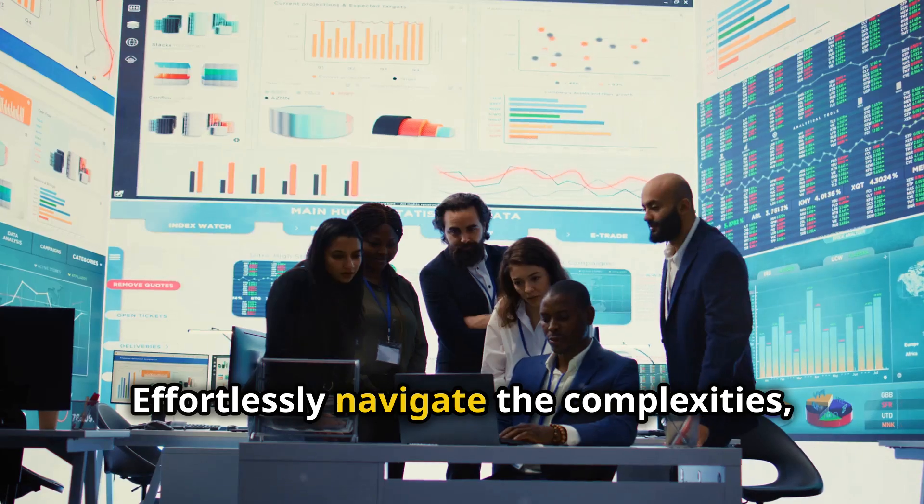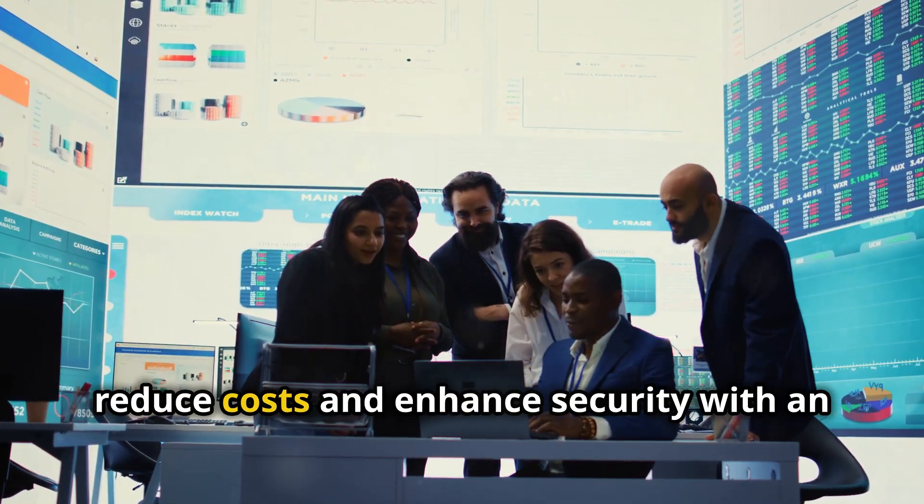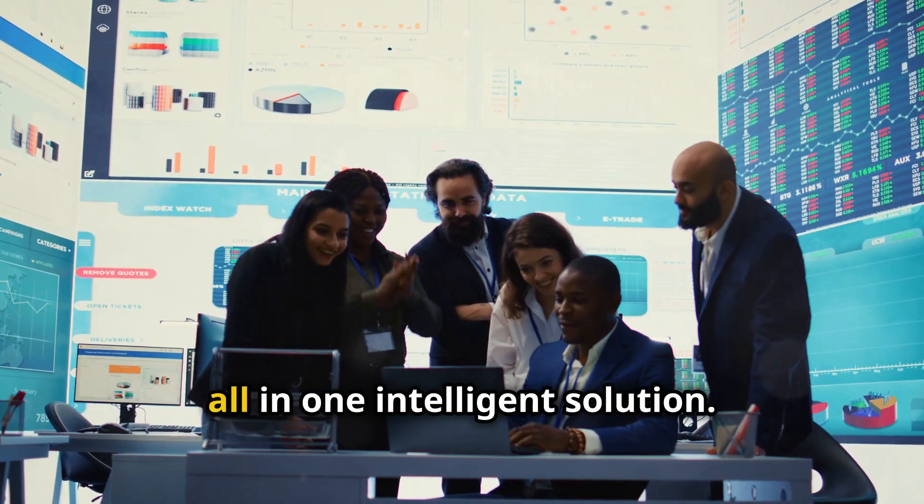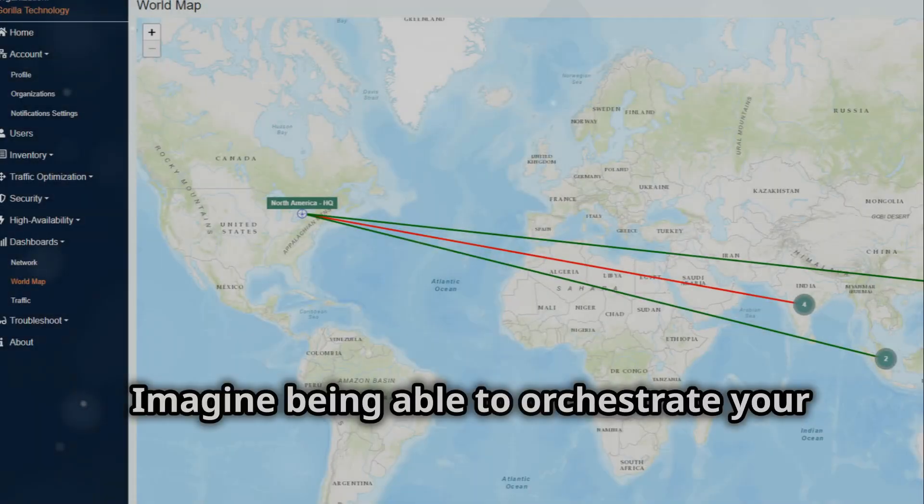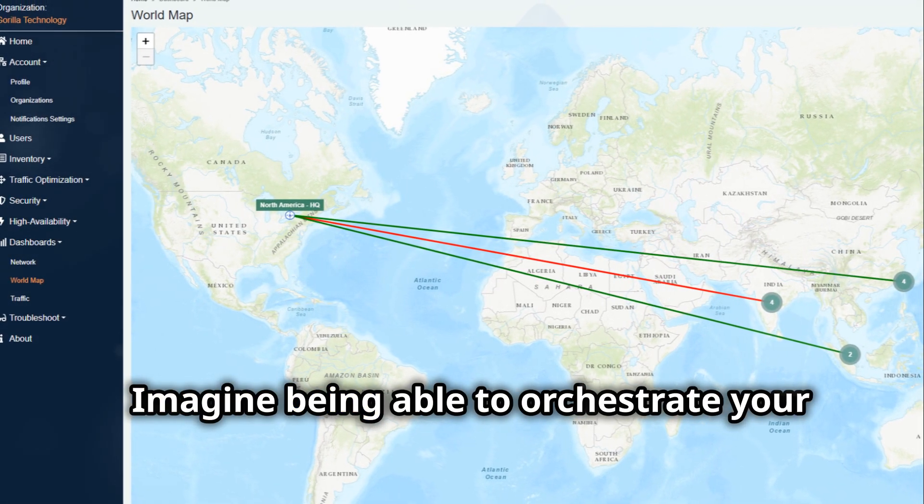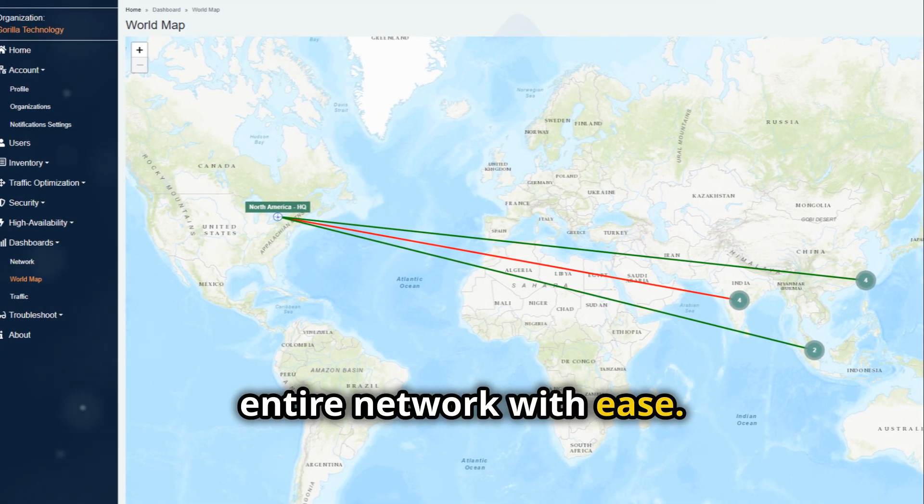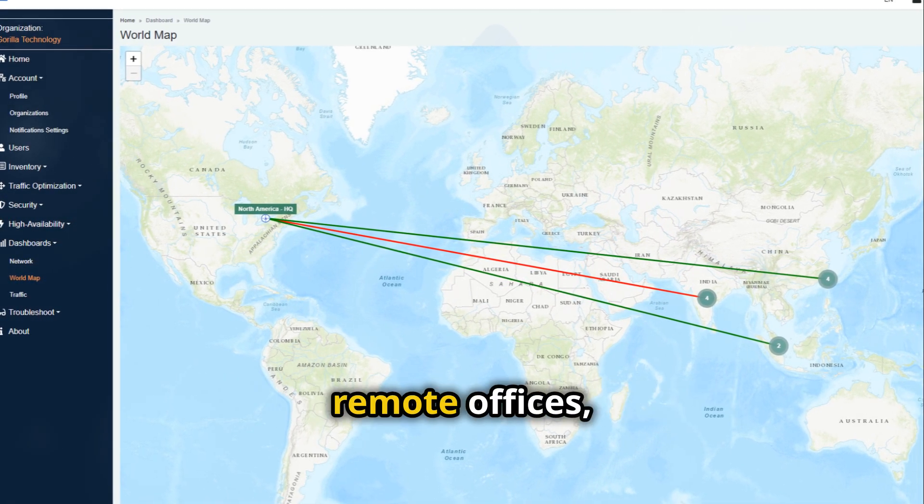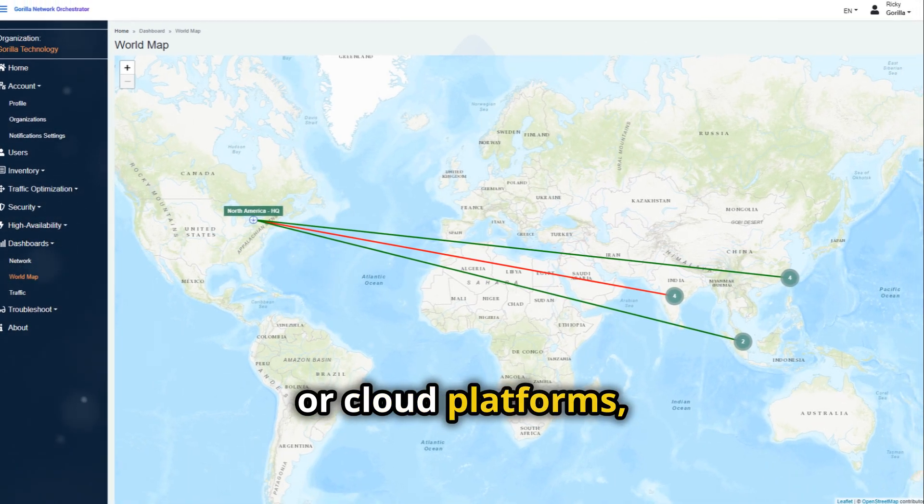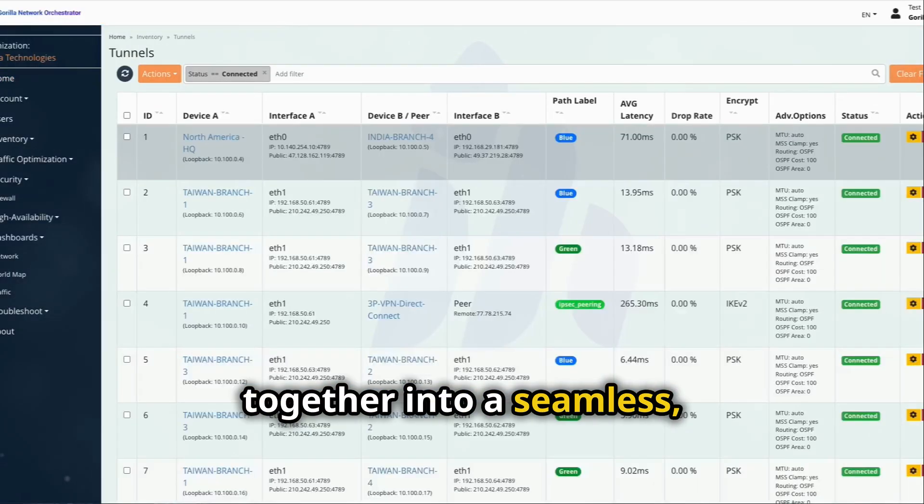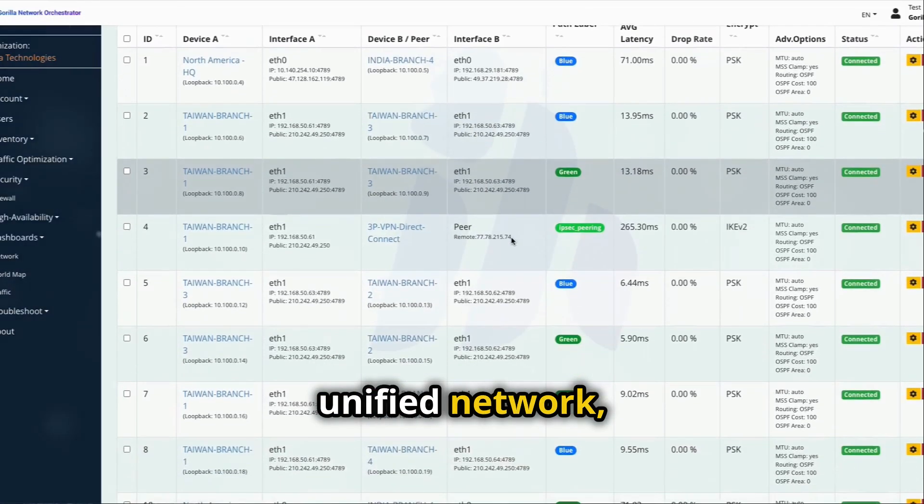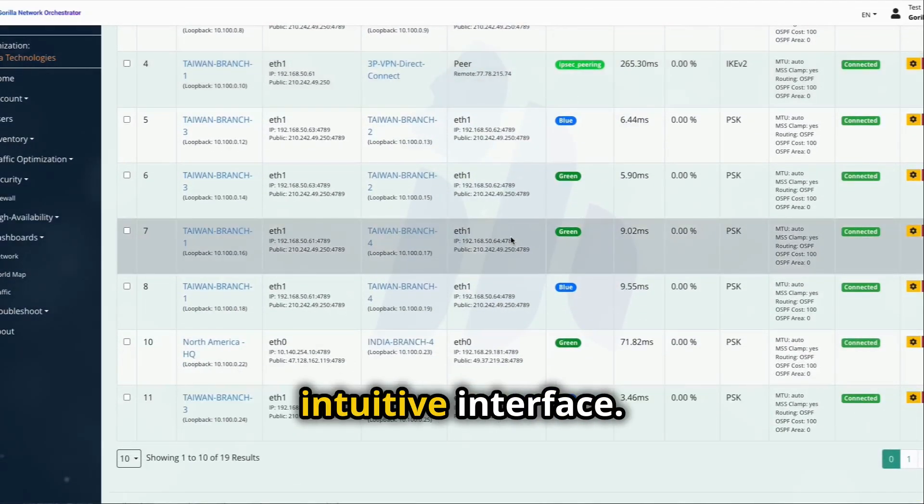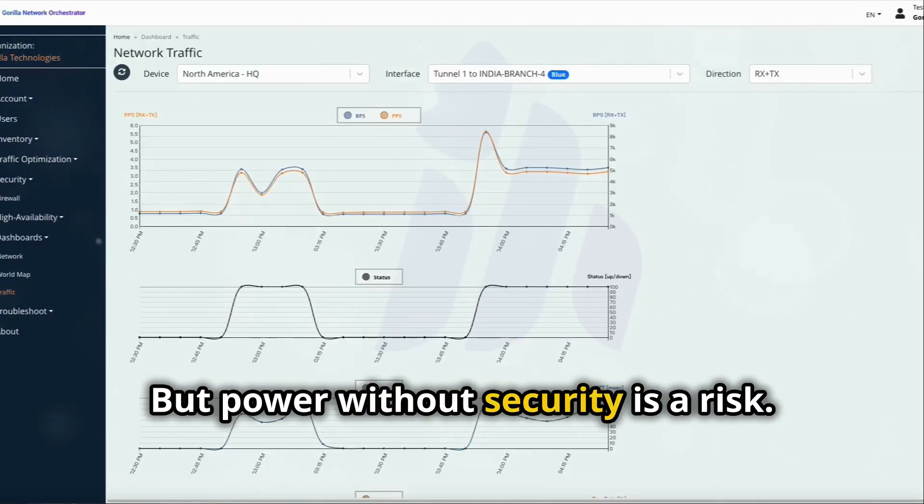Effortlessly navigate the complexities, reduce costs, and enhance security with an all-in-one intelligent solution. Imagine being able to orchestrate your entire network with ease—whether it is your data centers, remote offices, or cloud platforms. Intelligent Network Director brings them together into a seamless, unified network, one that you control from a single intuitive interface.